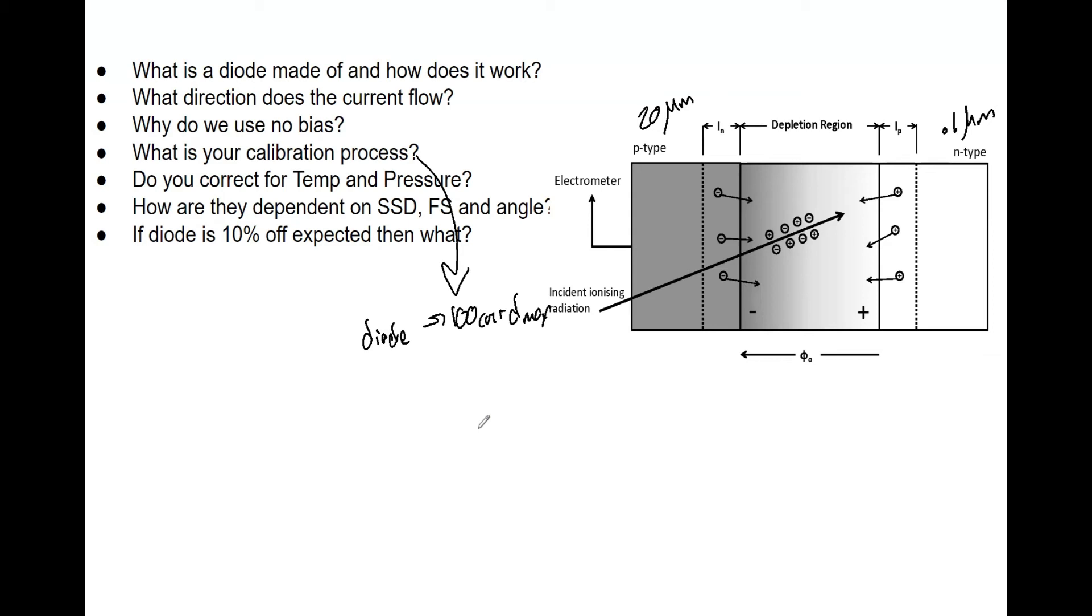Do we correct for temperature and pressure? We do not correct for pressure, but we do correct for temperature because with temperature you get an uncertainty of 0.5 percent per degree Celsius. So temperature can make a pretty big impact on your results; that is why we do correct for it.